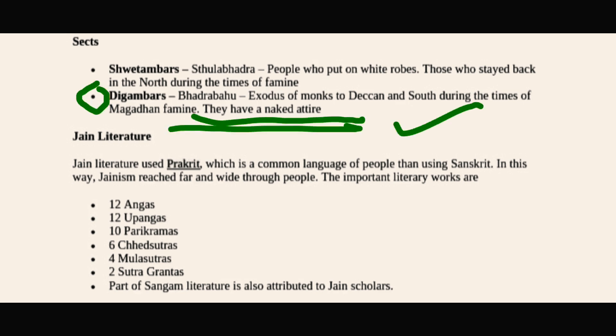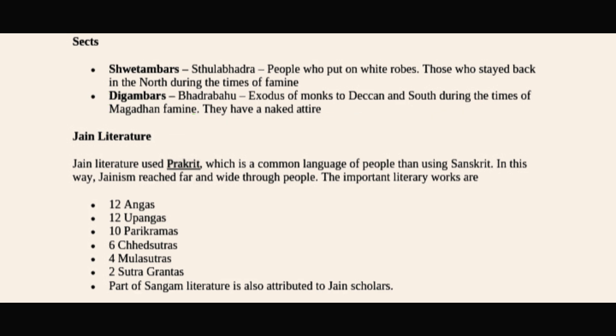Jain literature used the Prakrit language, unlike Buddhism which used Pali. Important Jain literary works include 12 Angas, 12 Upangas, 10 Parikarmas, 6 Chedak Sutras, 4 Mula Sutras, and 2 Sutra Granthas. Part of Sangam literature from southern India is also attributed to Jain scholars.